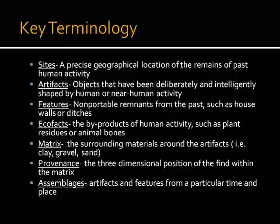Features are non-portable remnants from the human past, such as house walls or ditches. These can be indicated in the archaeological record through things like post molds, where the color of the soil is different where a wooden post was formerly inserted. You also have ecofacts, which are the byproducts of human activity, such as plant residues or animal bones. A lot of times you find ecofacts in middens — basically prehistoric compost piles or prehistoric garbage dumps — where people discarded things they weren't using from a plant or an animal.